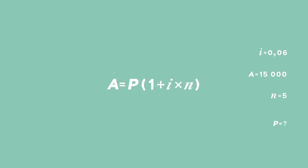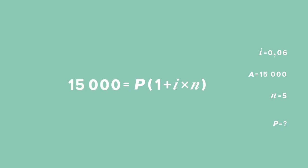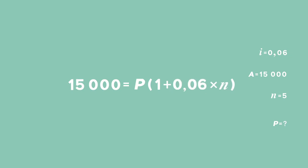I'm going to substitute the values I've been given. For A, 15,000 rand. P is what we're looking for. i is 0.06, and n is 5.